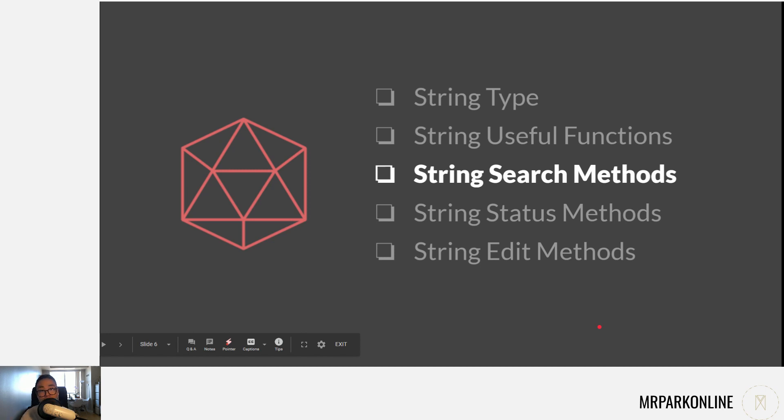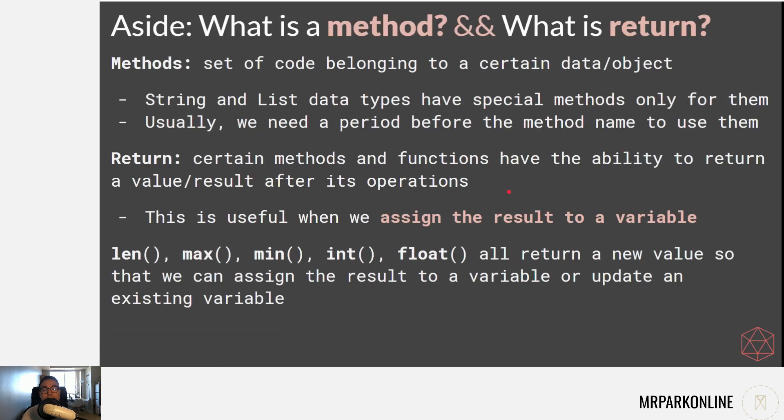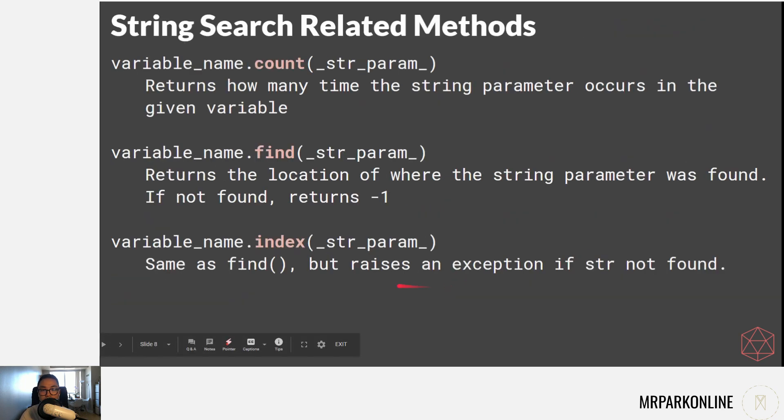Now we're going to learn some new methods - not functions, they're called methods. What is a method and what is a return? A method is a set of code that belongs to certain data, or what we call object programming. Strings and lists have special methods that only belong to them. We need a period to access these methods. Return is when a method or function has the ability to return a value after its operation. That's why when we use length or max, they return a value and we usually assign it to a variable or output it inside a print statement. Length, max, min, and float are all built-in functions provided by Python, and they all return a value so we can assign it to a result or print them in a print statement.